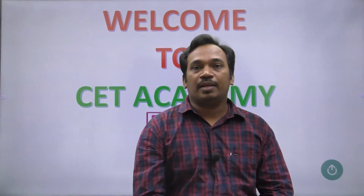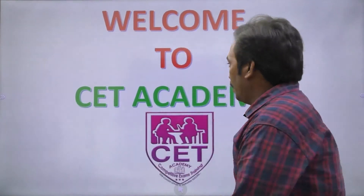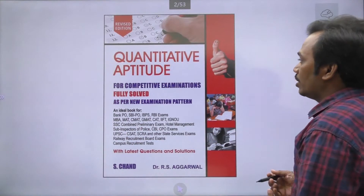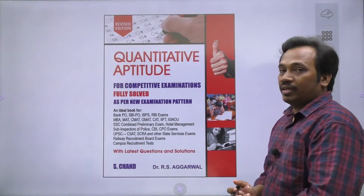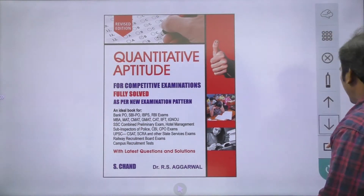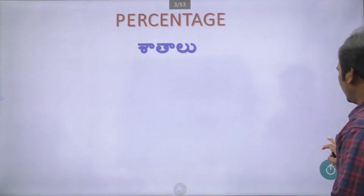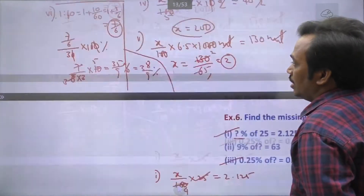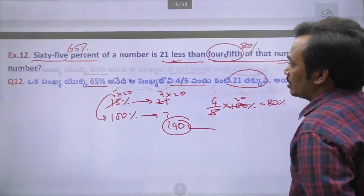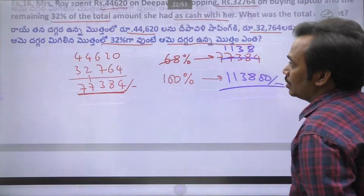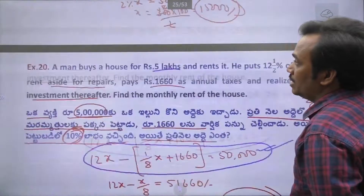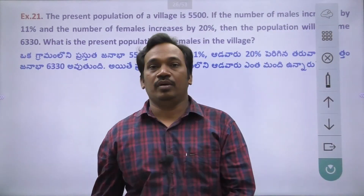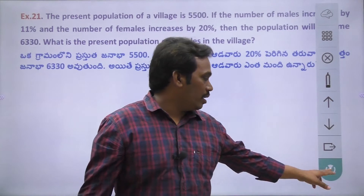Hi, welcome to Sheta Karmi. I am going to show you the topic of the URSA book - percentage problems. We have already completed 20 problems, so the remaining problems will continue from problem number 21.